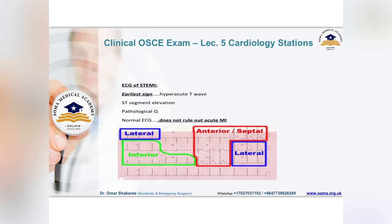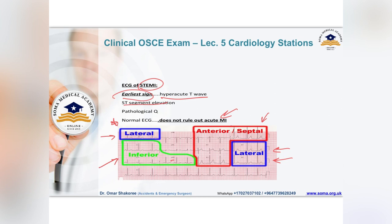Regarding the ECG: V5, V6, and Lead I are for lateral MI; V1, V2, V3, V4 are anteroseptal; Lead II, Lead III, and AVF are for inferior MI. The earliest sign of STEMI is hyperacute T wave elevation, followed by ST segment elevation. Remember: a normal ECG does not rule out acute MI — if a patient presents with chest pain and a normal ECG, acute MI is still not excluded.